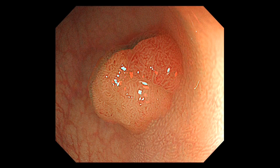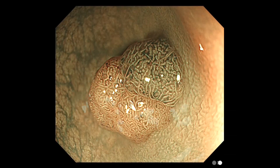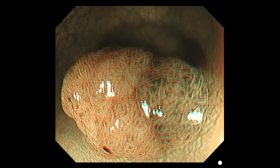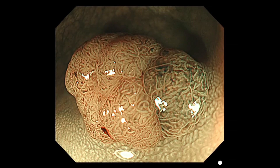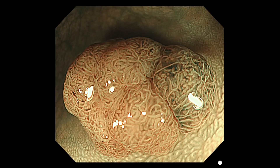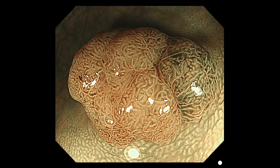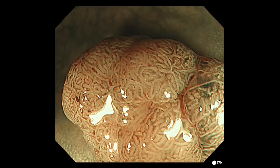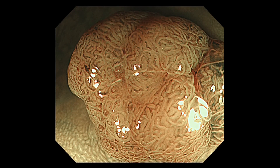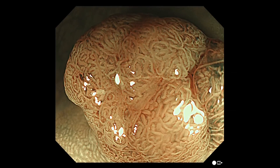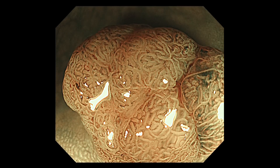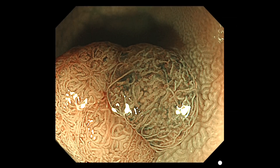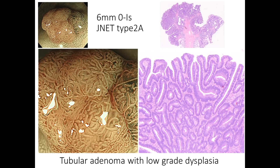This is a sessile polyp 6 mm in diameter. In magnifying NBI view, tubular and branched structures can be observed on its surface. Each microvessel has similar thickness and regular distribution, and is spiral in form. These are the typical findings of polypoid lesions for J-Net Type 2A. EMR was performed on this polyp, and the diagnosis was tubular adenoma with low-grade dysplasia.